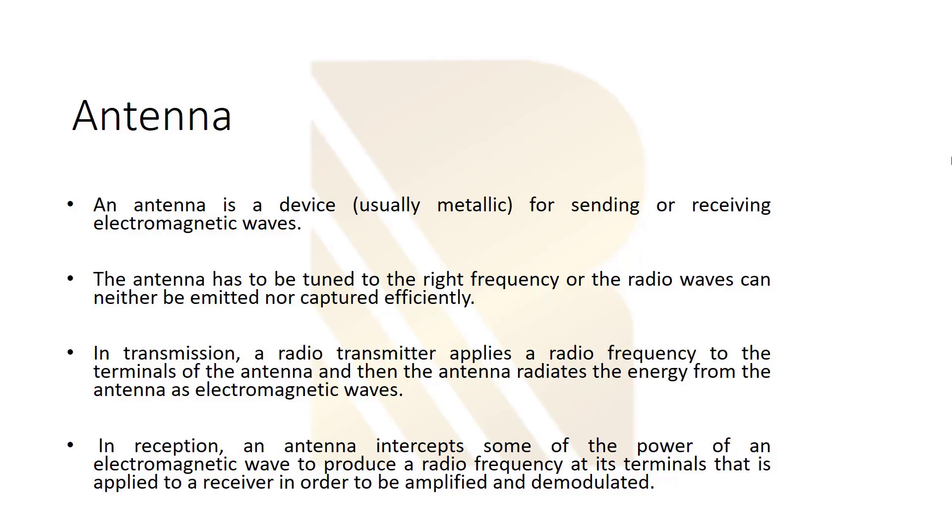So what is the role of antenna in transmission? A radio transmitter applies the radio frequency to the terminals of the antenna, and then the antenna radiates the energy from the antenna as electromagnetic waves. If you have a transmitter here and this is antenna, we have current here, so this current will produce electromagnetic waves through antenna, so basically this antenna radiates.